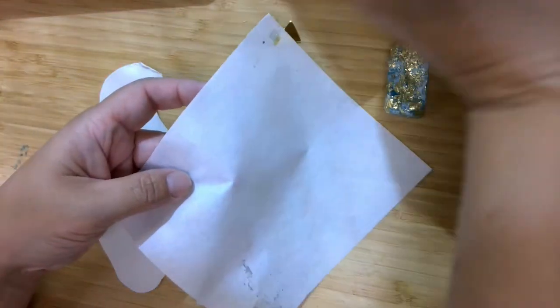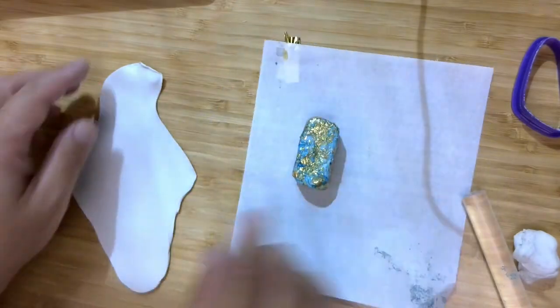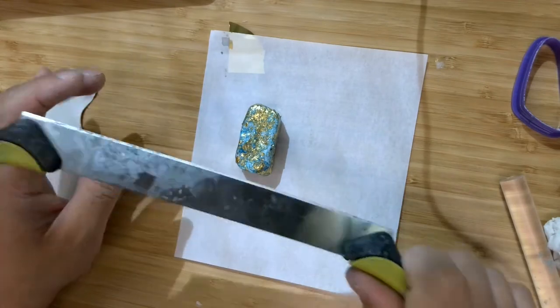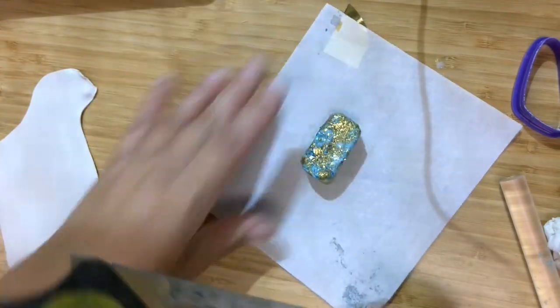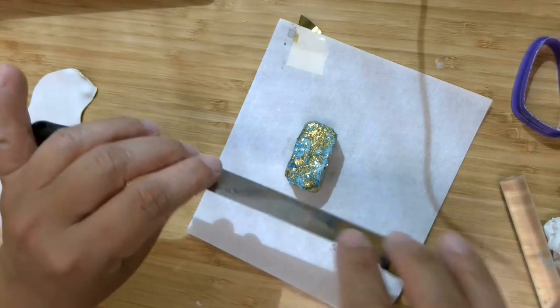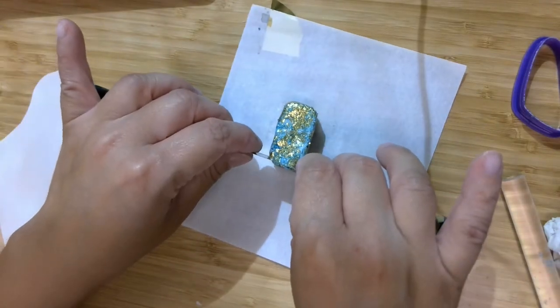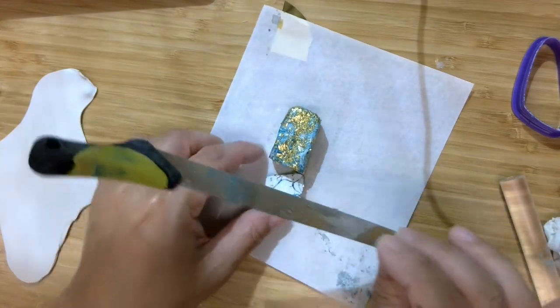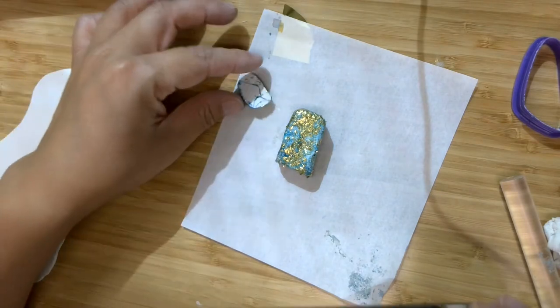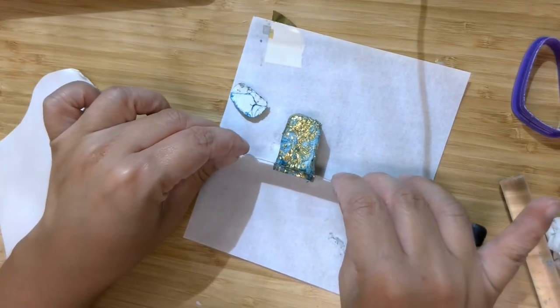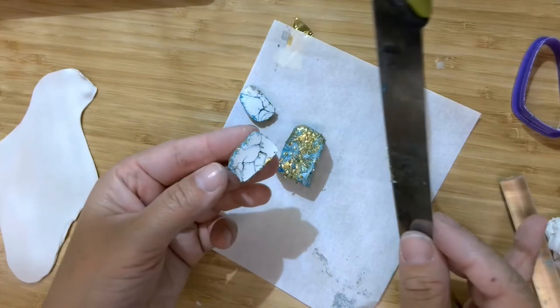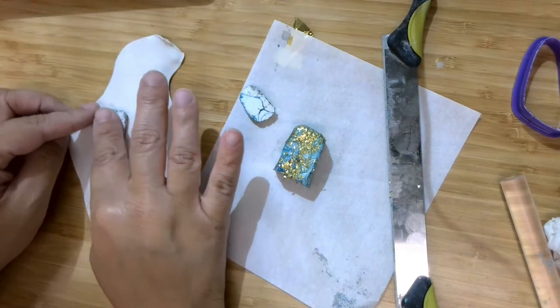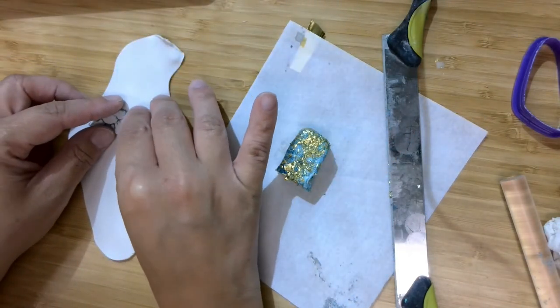And now we're going to do our slicing. So this tool is really sharp. So just be very careful. And yours will look a little different. Yours doesn't have the handles. But you'll just make about a quarter inch thick slices. So you can see the inside kind of looks like the inside of a rock.